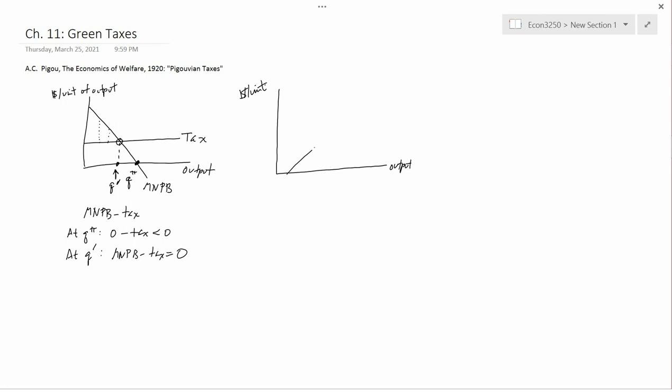So now we draw in the MEC curve, which represents the willingness and ability of the pollution victims to pay to reduce pollution. And we have our MNPB curve, just as before. Here's Q pi. And you'll recall that Q star, the socially optimal level of output, is here.